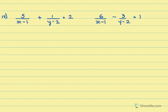This is the fourth sum and we carry on the same method. We separate the coefficients from the variables. So 5 is a coefficient, this is our variable 1 over x minus 1, plus 1 is a coefficient, y minus 2 is a variable, is equal to 2.